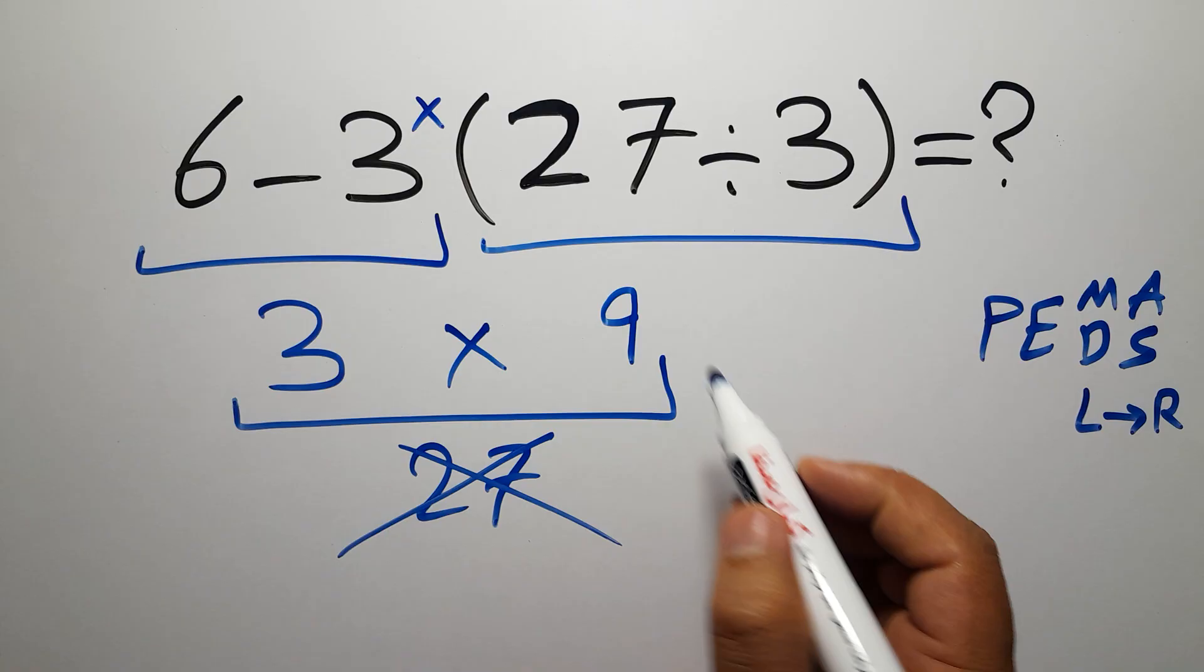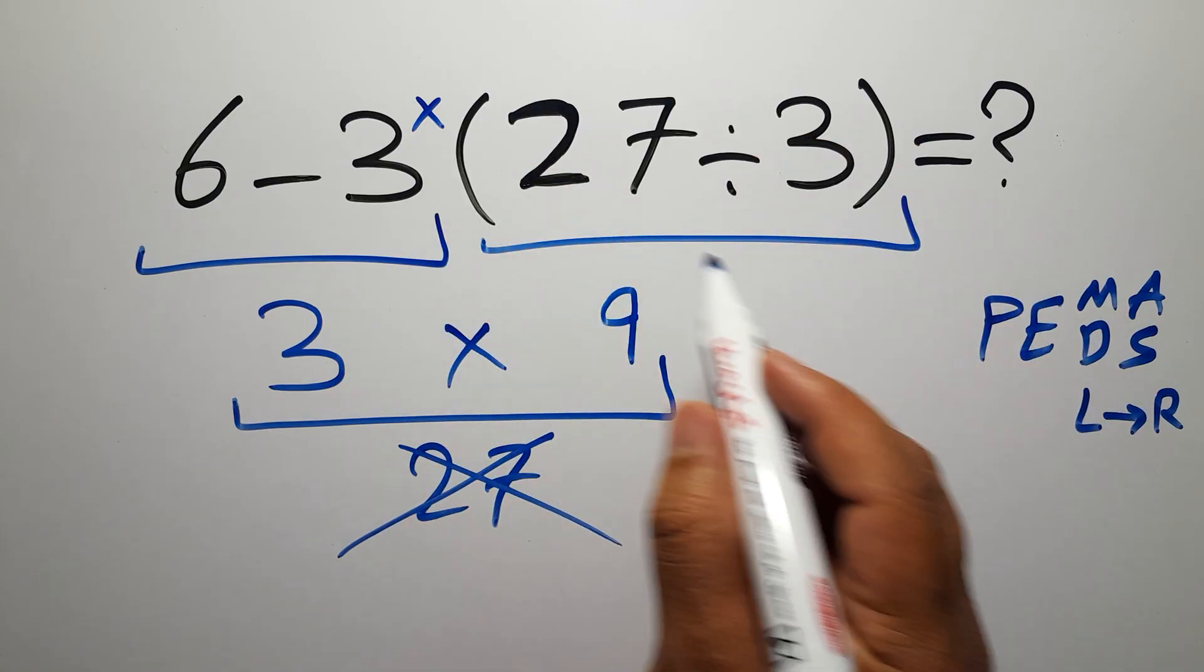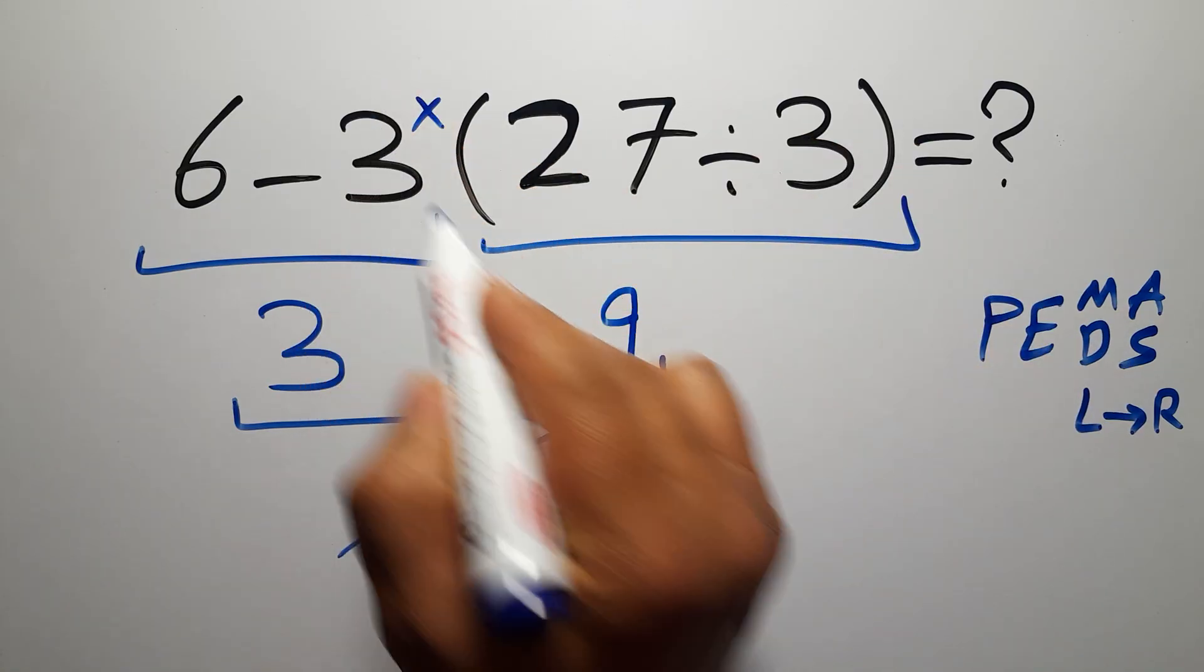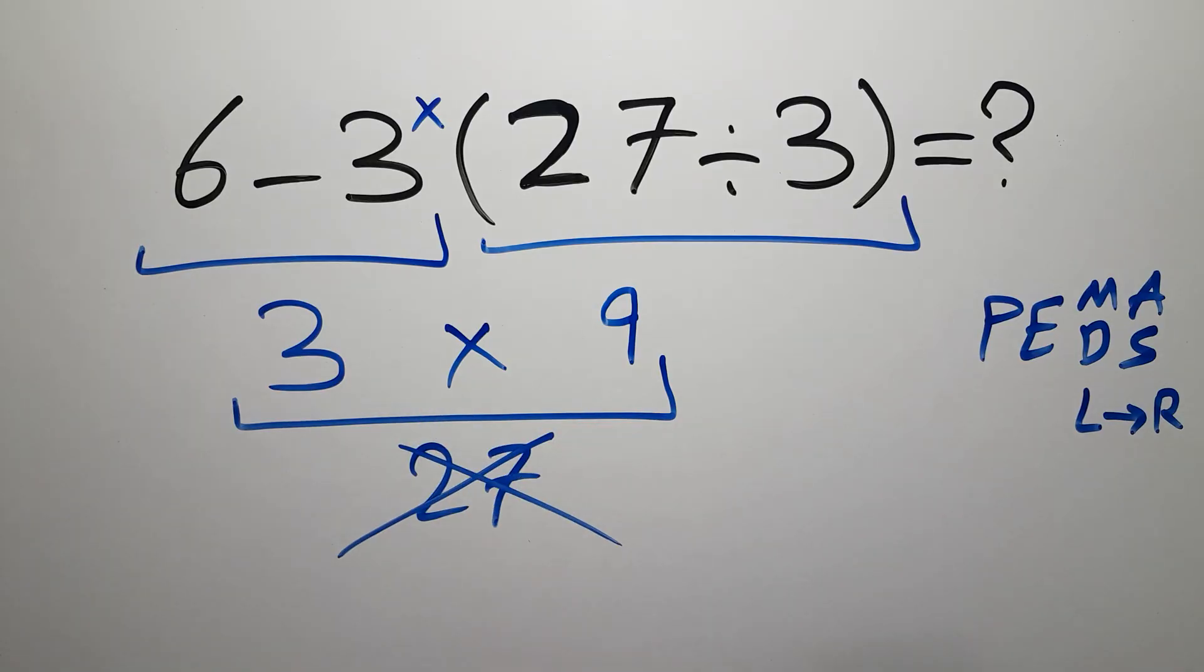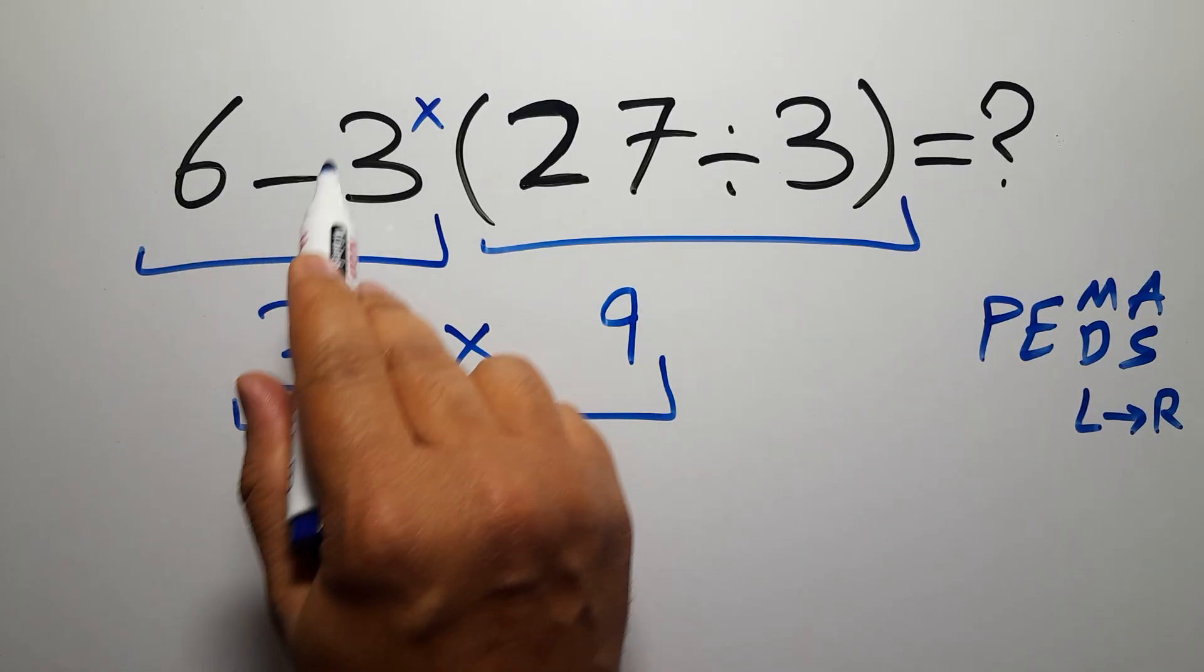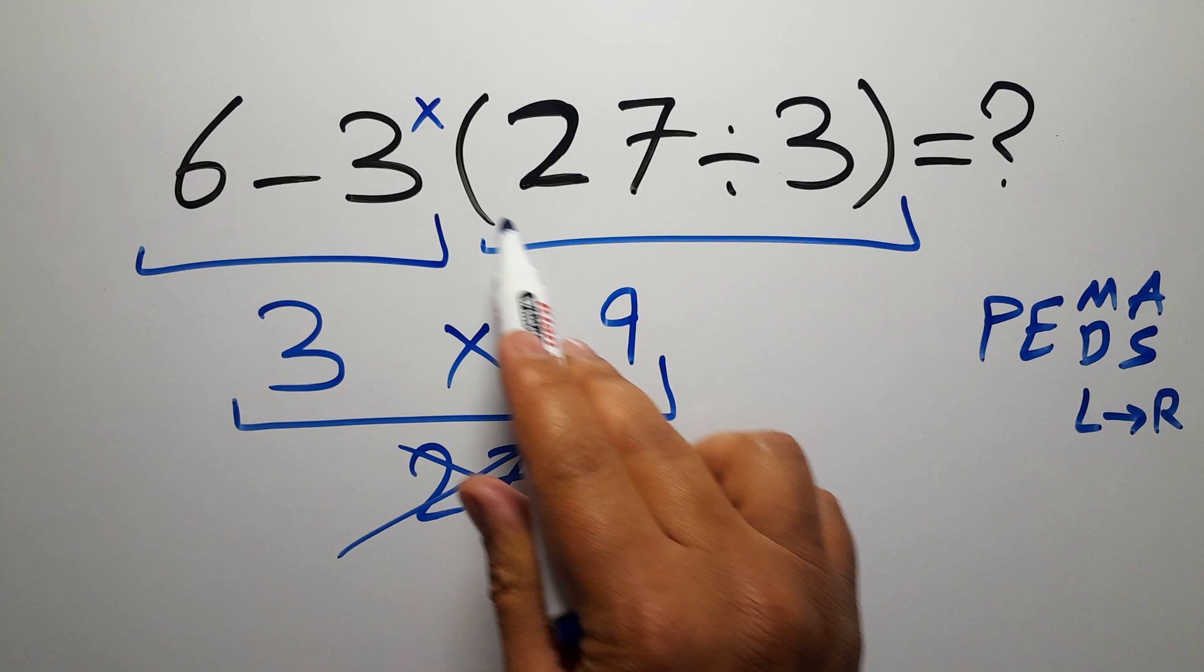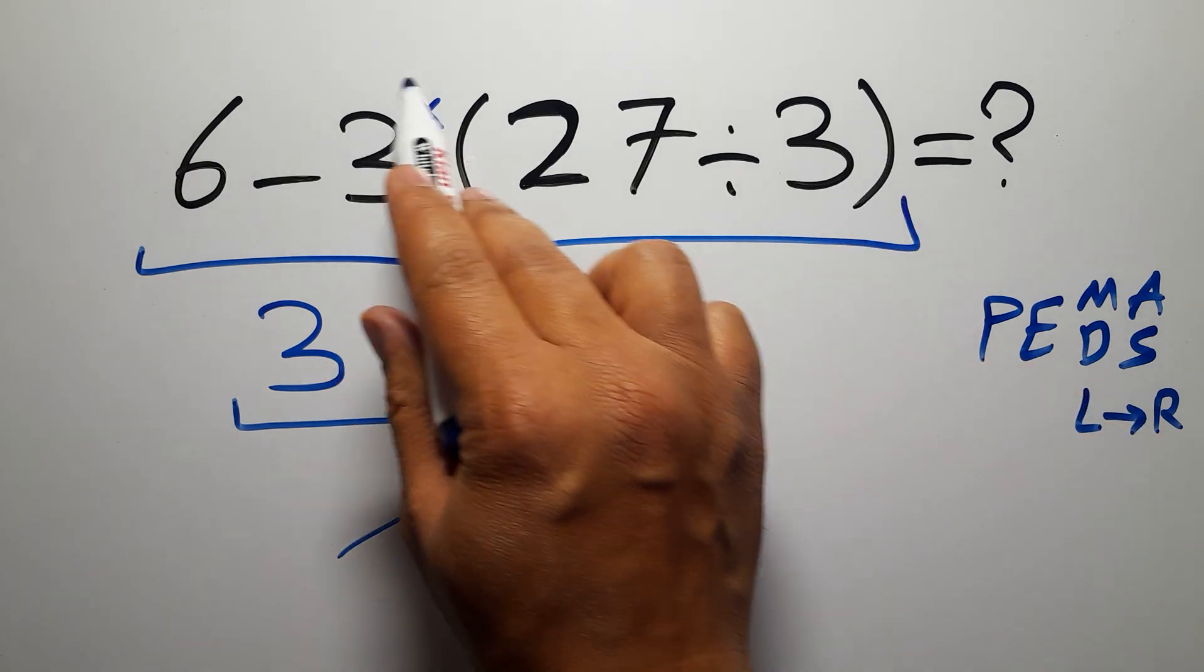First we have to do this parentheses, then this multiplication, and finally this subtraction. Okay, not this subtraction, then this parentheses, and finally this multiplication.